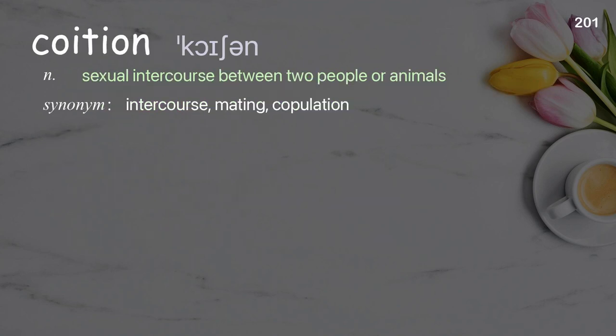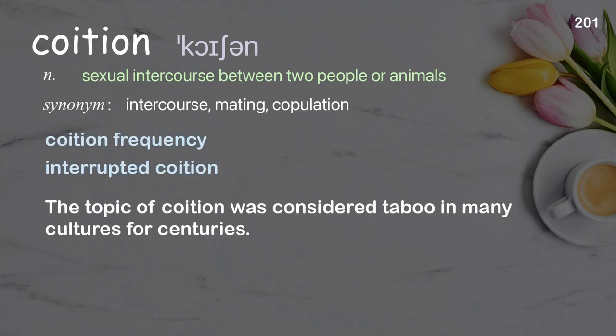Coition: sexual intercourse between two people or animals. Examples: coition frequency, interrupted coition. The topic of coition was considered taboo in many cultures for centuries.